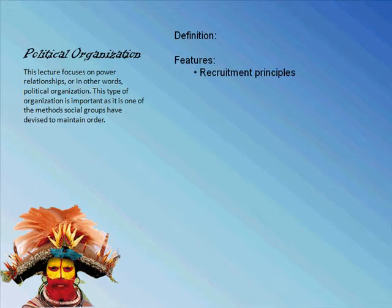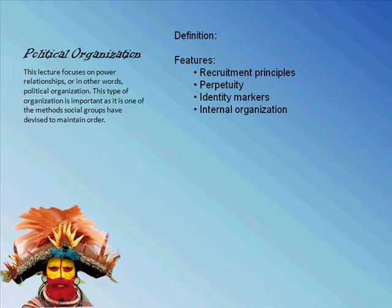The features of political organizations are: recruitment principles — the criteria for determining admission to the unit; perpetuity — the assumption that the group will continue to exist indefinitely; identity markers — particular characteristics that distinguish one political organization from another; internal organization — the orderly arrangement of members in relation to one another; procedures — prescribed rules and practices for behavior of group members; and autonomy — the ability to regulate its own affairs.